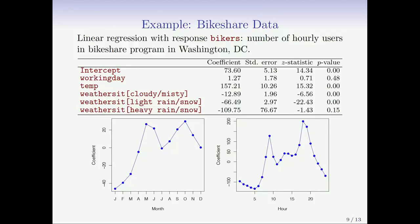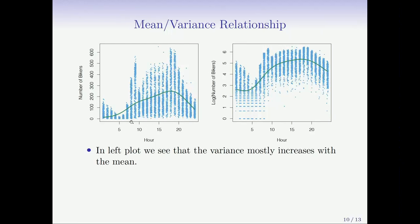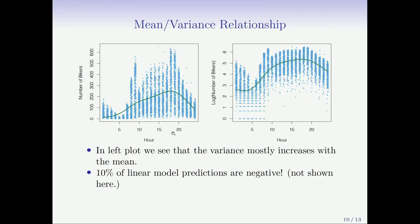The response is the number of hourly users, which is a non-negative variable. A plot of the response versus hour of the day with a smooth spline fit shows that when the mean is low, the spread is somewhat low, but when the mean is higher, the spread gets bigger — so the variance seems to increase with the mean. Linear regression assumes the variance of Y is constant. Furthermore, when fitting the full linear model, 10% of predictions are negative, because there's no constraint preventing that even though the response is always positive.